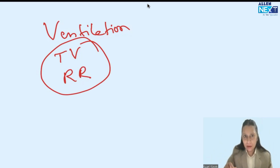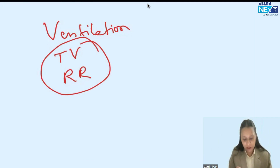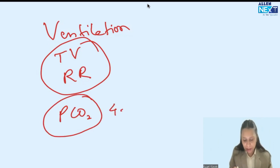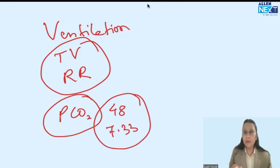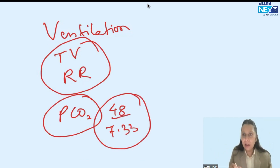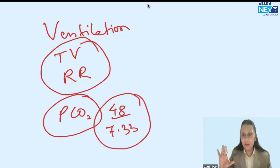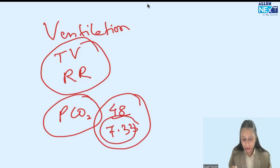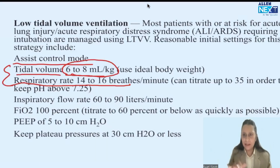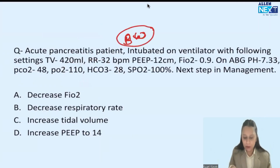In our patient, PCO2 is 48 and pH is 7.33 — both are tolerable. Normally PCO2 is 35 to 45, so 48 is towards the higher side, but we can tolerate 48 mmHg PCO2 with a pH of 7.33. So ventilation is more or less adequate with this setting in this patient.